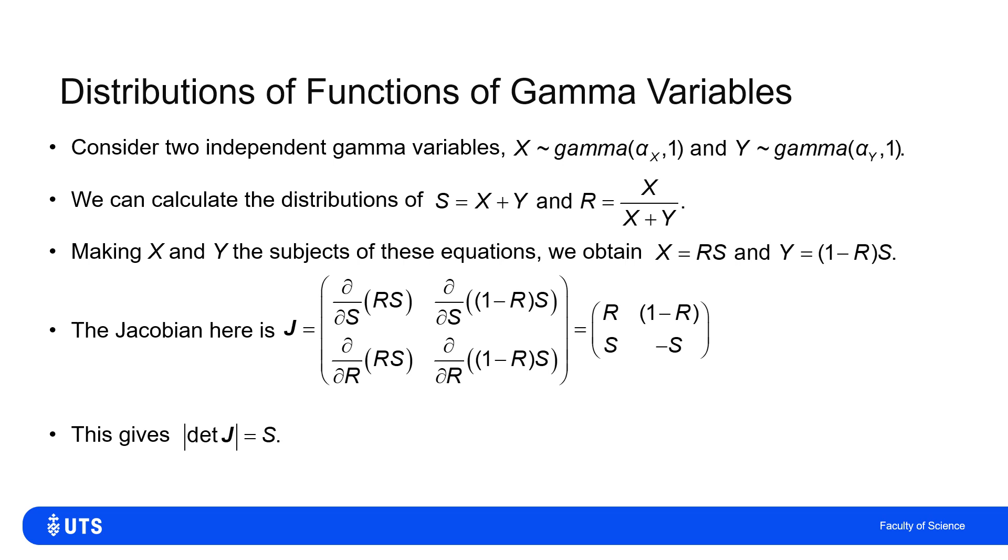So in order to work out the joint distribution of S and R, I'd write down the joint distribution of X and Y, which is straightforward because it's just they're independent with the product of the two gammas.